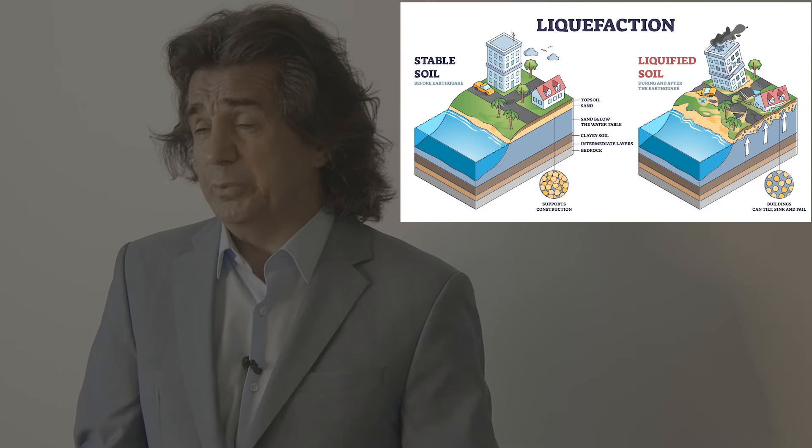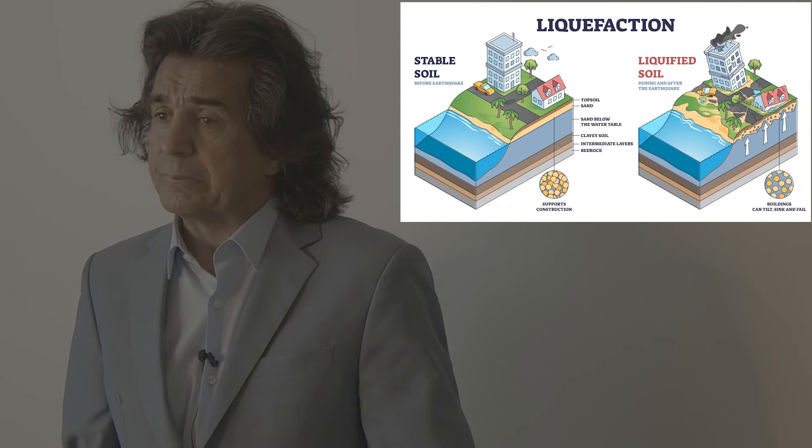If a magnitude 7.4 earthquake had happened in the New Jersey and New York area, I think the result would have been a disaster. The main reason is that the constructed facilities are not designed for large earthquakes in the Northeast. If a large earthquake — not even seven, even a six — hits the Northeast area, some of the major concerns would be fires, landslides, and liquefaction. I think fire would be one of the major concerns.